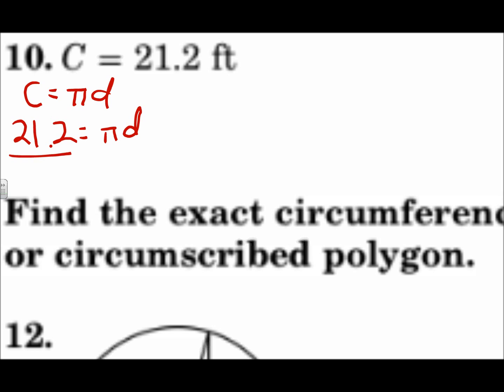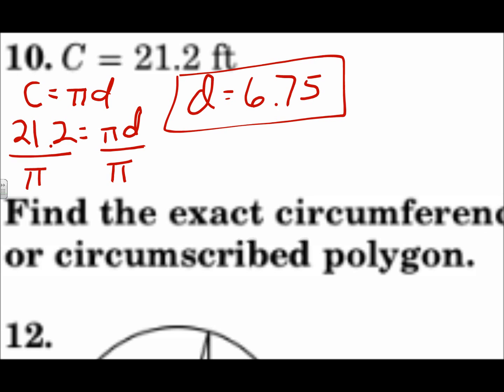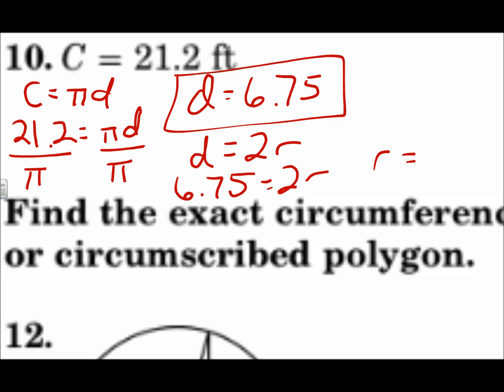C equals pi times D will give us the diameter. C is 21.2, so we divide both sides by pi — use the pi button on your calculator, not 3.14, for a better answer. So 21.2 divided by pi, rounded to the nearest hundredth, is 6.75. Then using D = 2r: 6.75 = 2r, divide both sides by two, and the radius is 3.38. Both measurements are in feet.